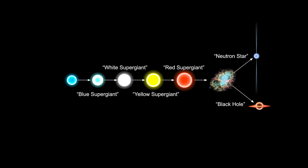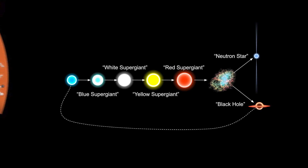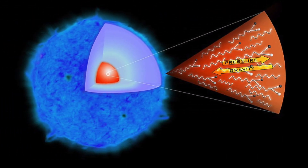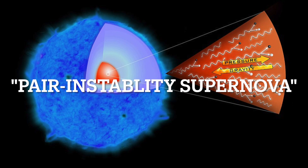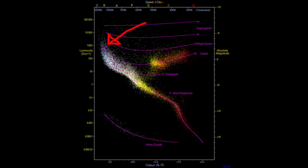I also did a video on black holes if you're interested. They can also directly turn into black holes if their mass is greater than 250 solar masses. There's also the pair instability supernova, but we don't need to talk about that. These are for the ending of the most massive stars.